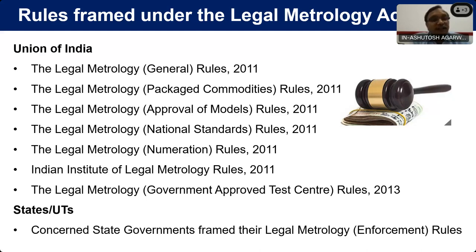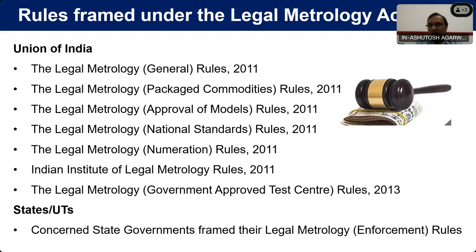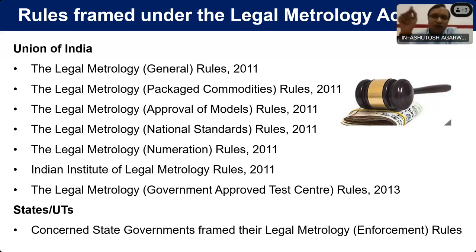The Legal Metrology (Numeration) Rules — this is again a very important rule. How to represent a number? In the Indian system, we represent the decimal: after the decimal, we put two zeros, and before the decimal, we put first three zeros and then two zeros, two zeros, two zeros. This is the way of numeration in the Indian system, and it is very important for banking and transaction purposes — and for declarations on the package.